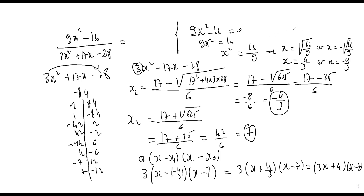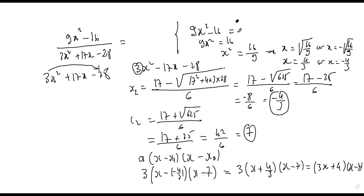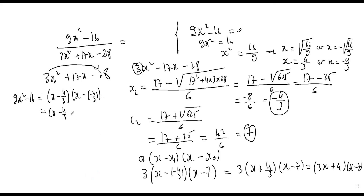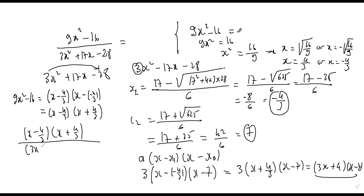We can write the factor form of nine x squared minus sixteen as nine times x minus four over three, times x plus four over three. Which simplifies to: x minus four over three, factor x plus four over three. Replace in the full fraction and cancel the common factor x plus four over three.